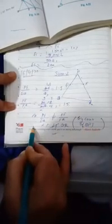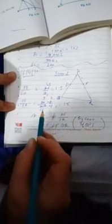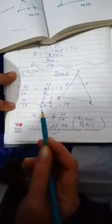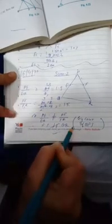BPT का Converse यही कहता है, ratio की value equal तो line parallel. और BPT क्या कहता है? Line parallel दिया हुआ है, तो ratio equal आएगा. Okay. तो जब आपको parallel की बात दिखानी है, तो आप reason में write करेंगे, Converse of BPT.